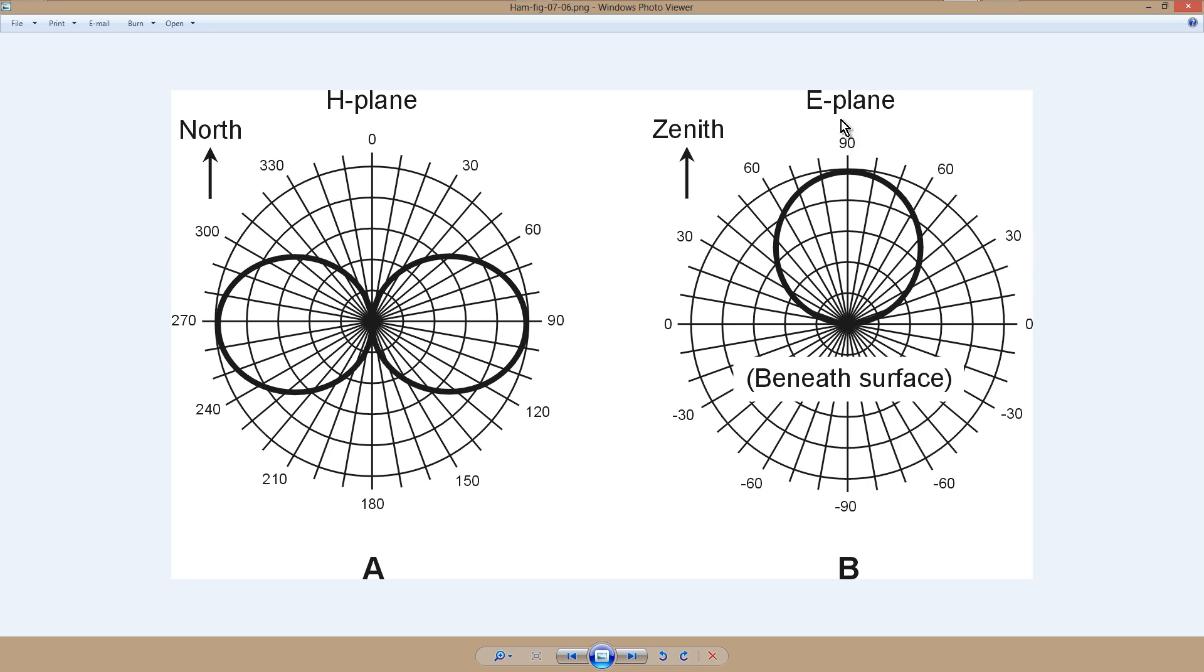So that's what an E-plane or elevation plane pattern looks like, and when you see directional patterns for antennas, you will usually see the H-plane and the E-plane. Sometimes they'll call this the V-plane, vertical plane. But when you're talking about an E-plane, you have to make sure you know where the wire is oriented relative to this graph. In this particular case here, the wire is oriented going east and west. If you run it north and south, it's going to look pretty much the same.